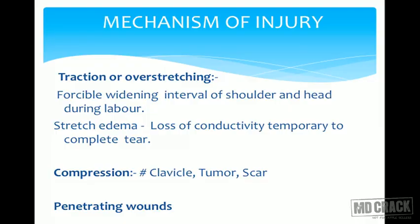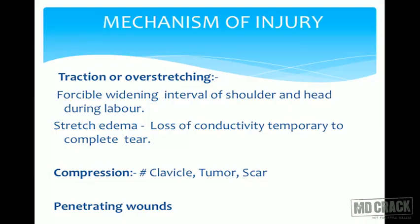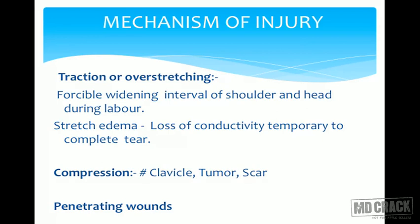The mechanism of injury for the brachial plexus: traction or overstretching is one of the most important causes — that is, forcible widening of the interval between the shoulder and head, such as during labor when there is a sudden pull on the child, causing stretch of the nerves. Stretch leading to edema surrounding the nerve causes loss of conductivity — from temporary to a complete tear. Compression from a clavicle fracture, swelling, tumor, or scar can also cause injury, as can penetrating wounds.